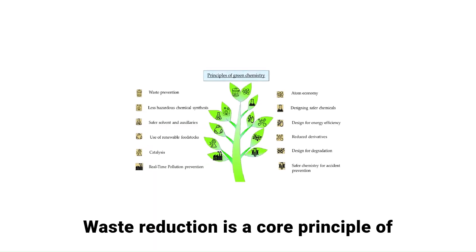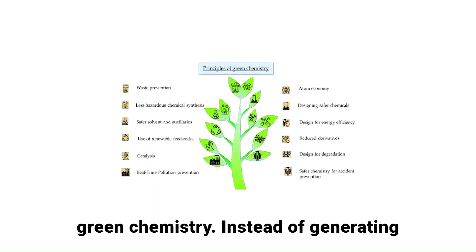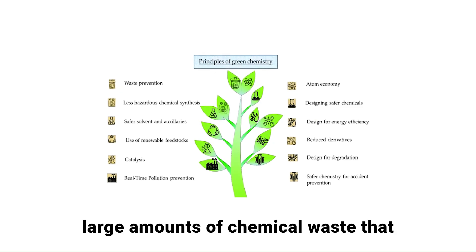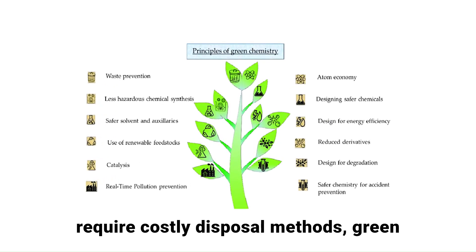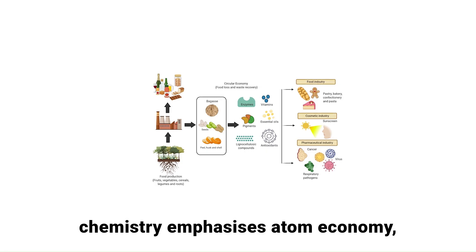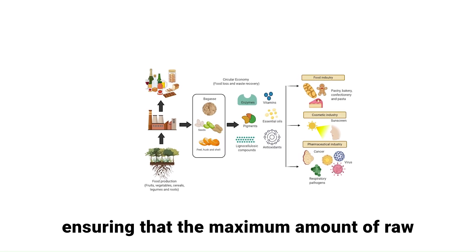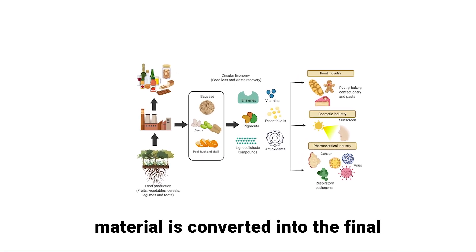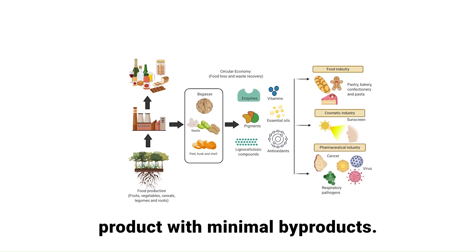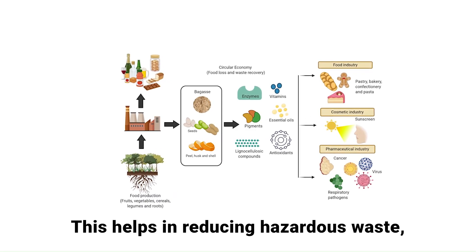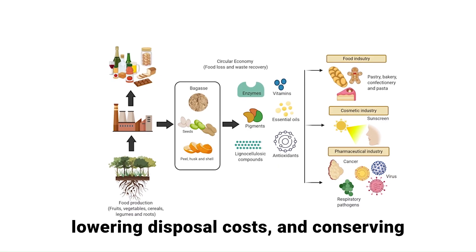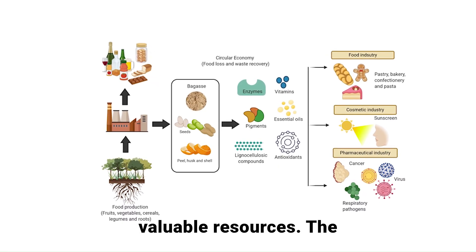Waste reduction is a core principle of green chemistry. Instead of generating large amounts of chemical waste that require costly disposal methods, green chemistry emphasizes atom economy, ensuring that the maximum amount of raw material is converted into the final product with minimal by-products. This helps in reducing hazardous waste, lowering disposal costs, and conserving valuable resources.